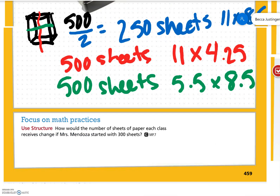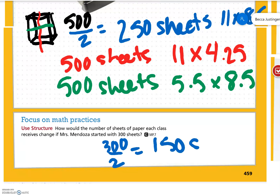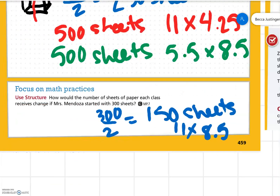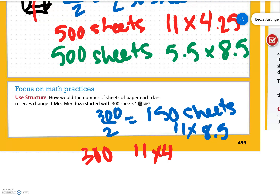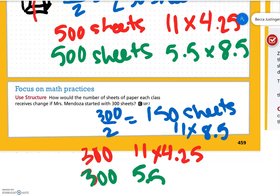Focus on math practices. How would the number of sheets of paper each class receives change if Ms. Mendoza started using 300 sheets? Well, the first way — 300 divided by 2 — would give us 150 sheets per class. The other way would still give us 300 sheets with the 11 by 4.25, and 300 sheets with the 5 and a half by 8 and a half.